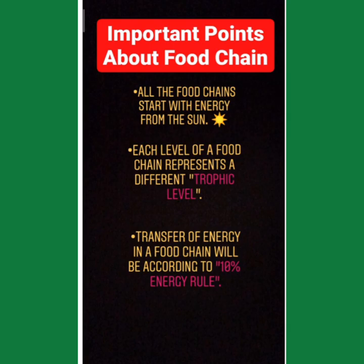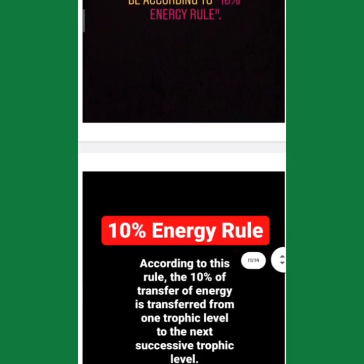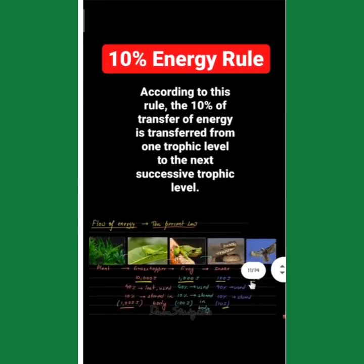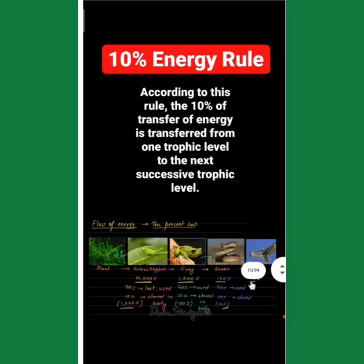Transfer of energy in the food chain will be according to the 10% energy rule. This is very important — this is a numerical rule in your exam. According to this rule, only 10% of energy is transferred from one trophic level to the next successive trophic level.